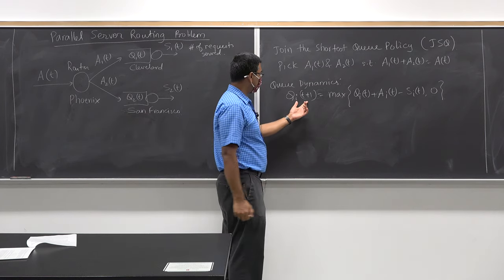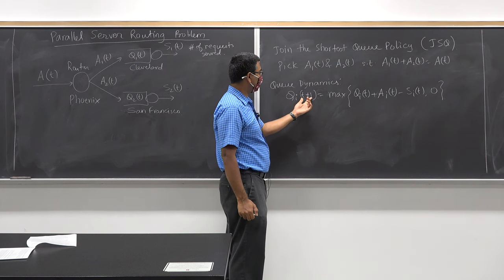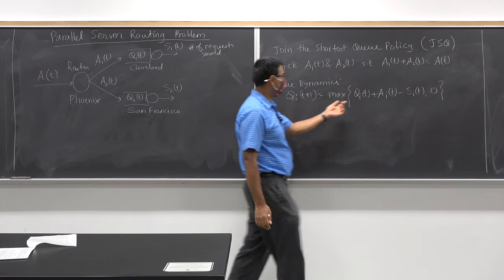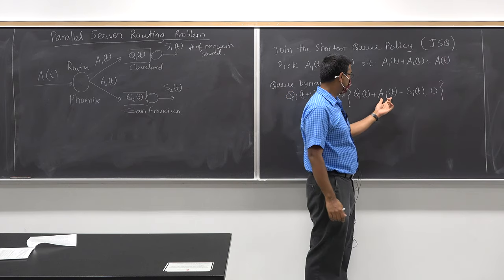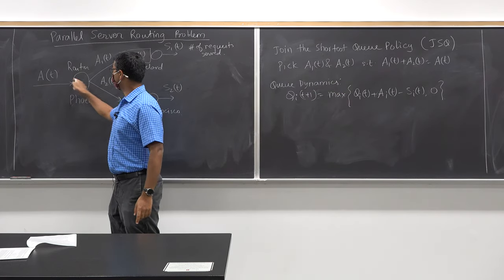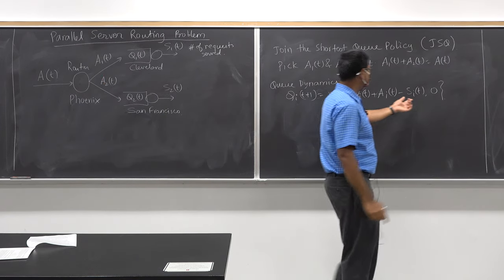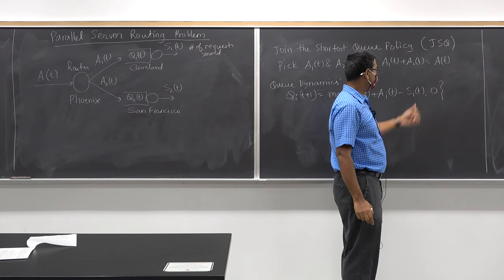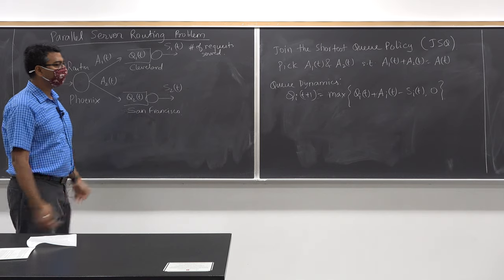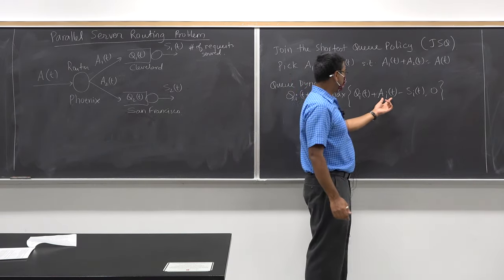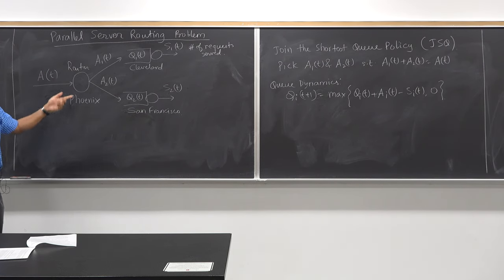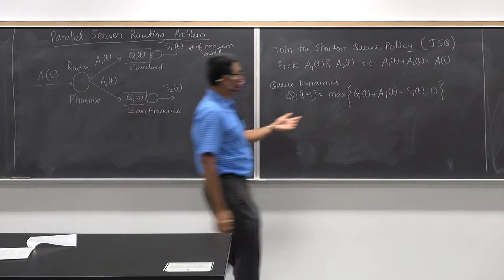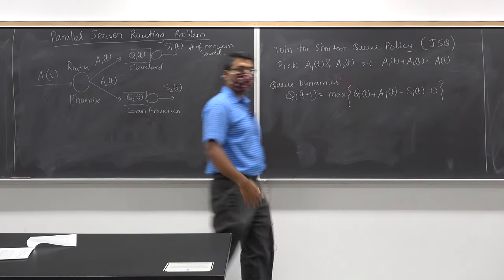The queue dynamics says: the number of requests in the queue at time t+1 equals the number at the current time step plus the new requests that have arrived — determined by the router — minus the requests served at the current time. Of course, a_i(t) is a random variable because we don't know how many people will request what in the next 30 seconds.